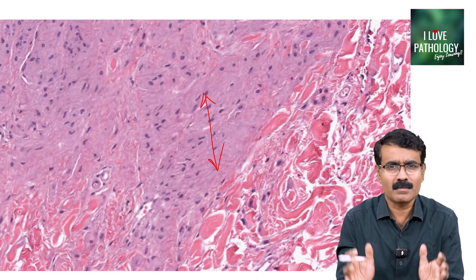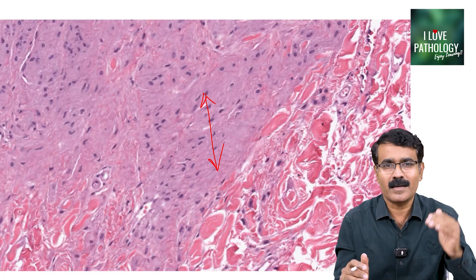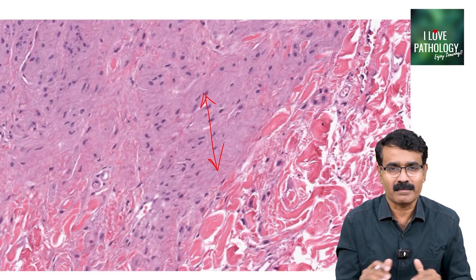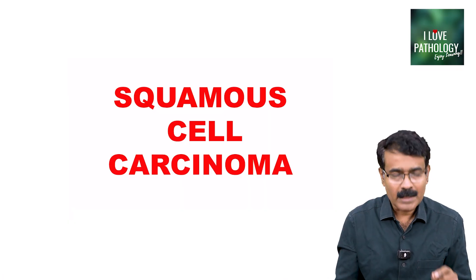It is much simpler — symmetrical, circumscribed, type A, type B, and type C. That completes intradermal nevus.